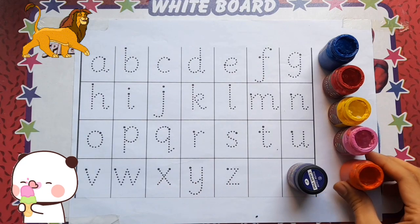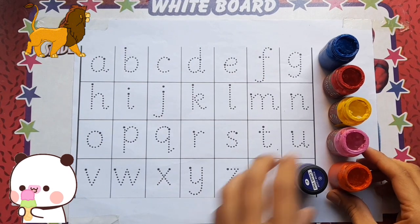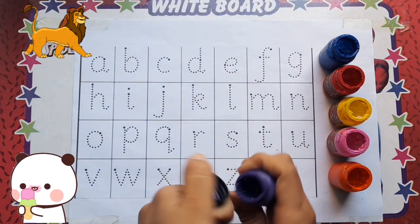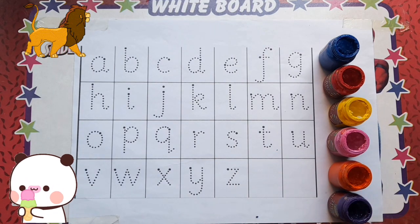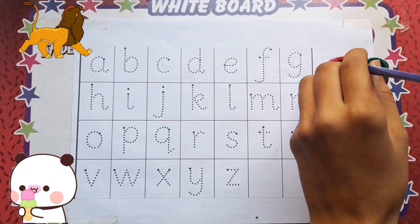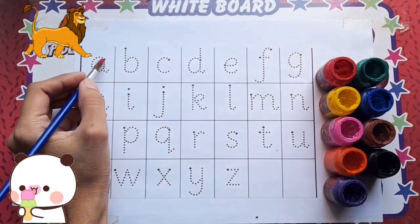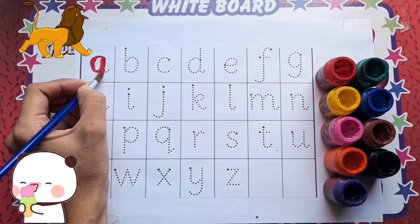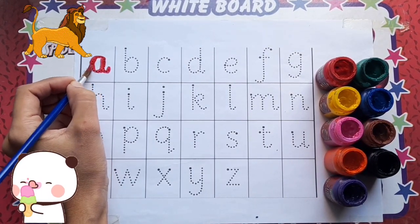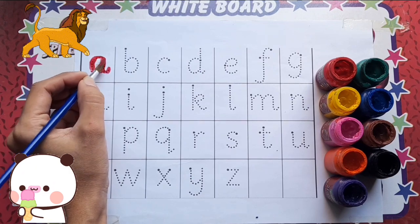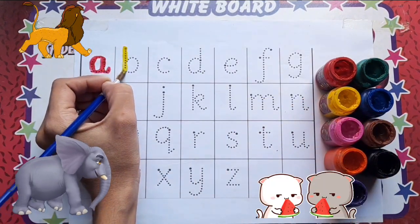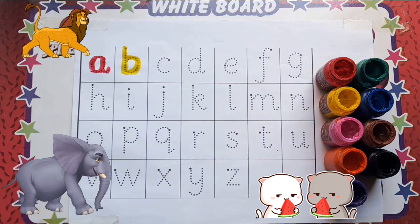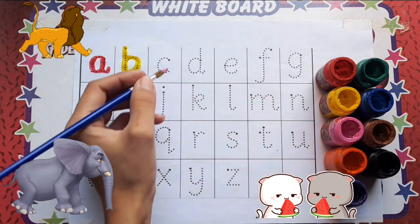Orange color, purple color, red color. A, A for apple. Yellow color. B, B for ball. Pink color.